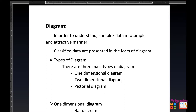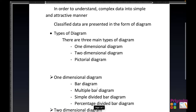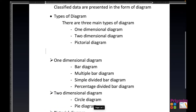These are the three types of diagrams we are going to learn in Exercise 2.3. In one dimension diagrams, we'll learn about the bar diagram, multiple bar diagram, simple divided bar diagram, and percentage divided bar diagram. This will be more clear with the explanation of the solution, and there are some calculations which will be very simple and easy to understand.